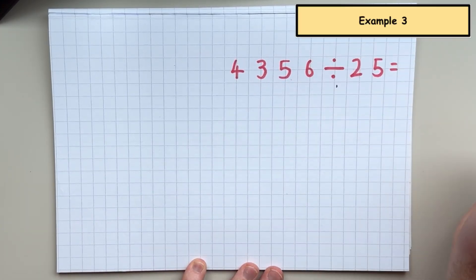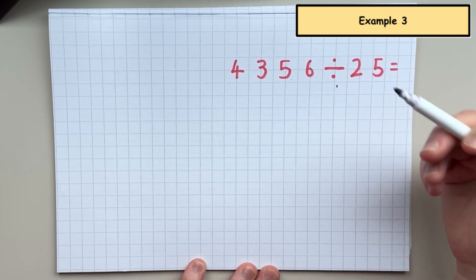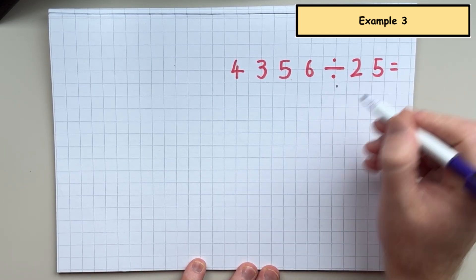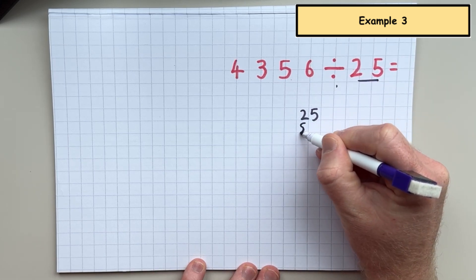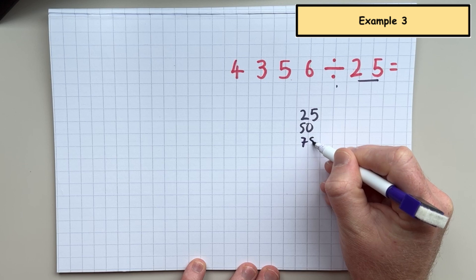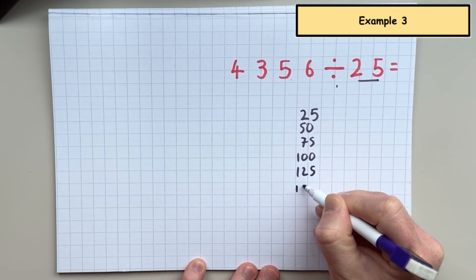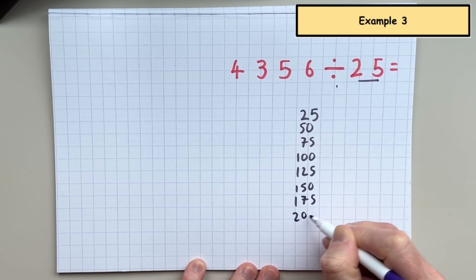In this final example, we're going to be left with a remainder. So I'm going to show you how you can show that as a decimal if you choose to. So I'm going to do the 25 times table first because we're dividing by 25. 25, 50, 75, 100, 125, 150, 175, 200. And I'll probably stop there.